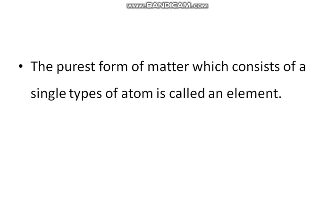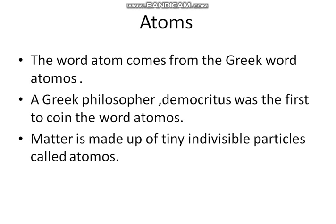The purest form of matter which consists of a single type of atom is called an element. The word atom comes from the Greek word 'atomos'. A Greek philosopher Democritus was the first to coin the word atomos, meaning matter is made up of tiny indivisible particles called atoms.